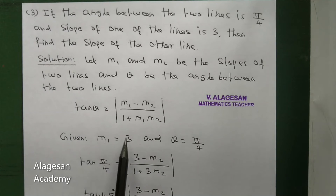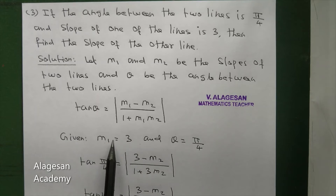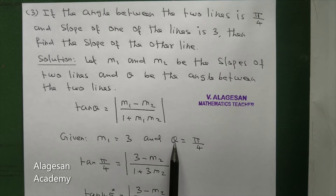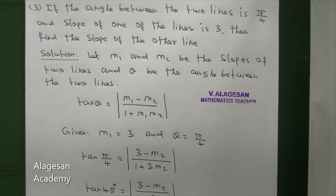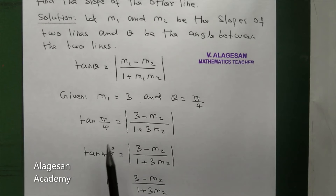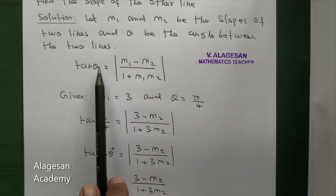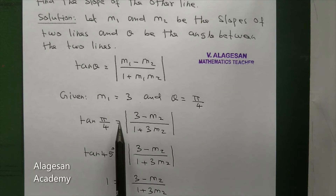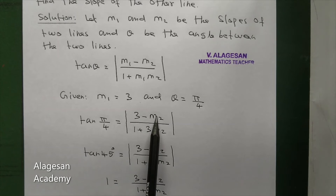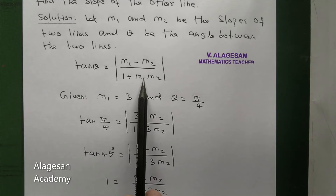Given M1 equal to 3 — the slope of one line is 3 — and theta, the angle between the two lines, is π by 4. So tan(π/4) equal to modulus of 3 minus M2 divided by 1 plus 3·M2.